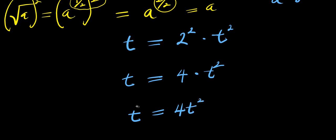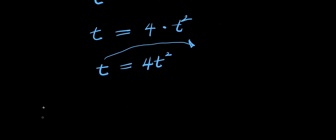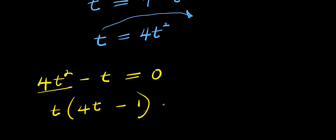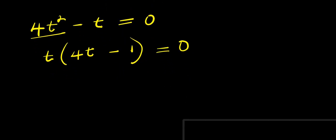The next step is to move the t over to one side — it becomes negative t. So we have 4t squared minus t equals 0. Now we factor out t: t times 4t minus 1 equals 0. We can then write two equations: t equals 0, or 4t minus 1 equals 0.